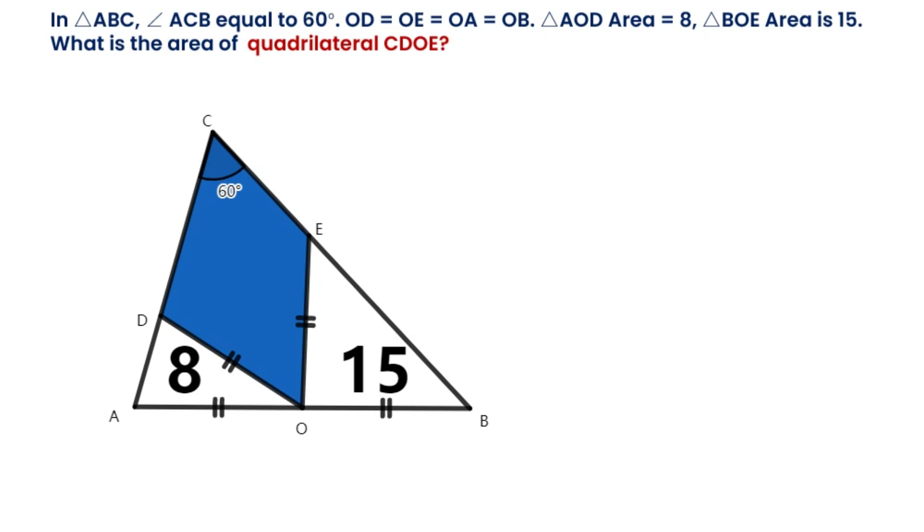When we look at this problem, OD equals OE equals OA equals OB. We can think of them as having O as the radius of the center of a circle. Let me draw this circle. So AB is the diameter of this circle.